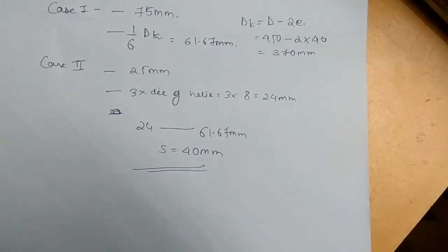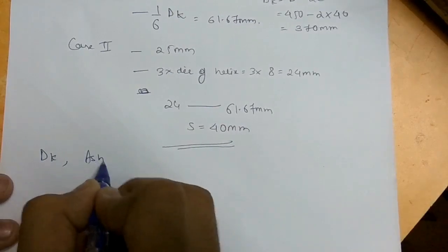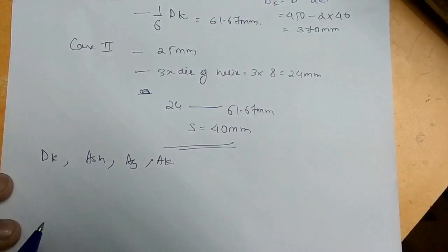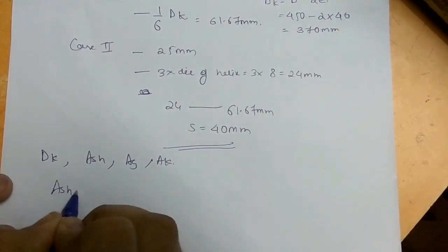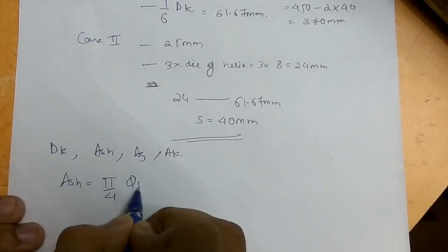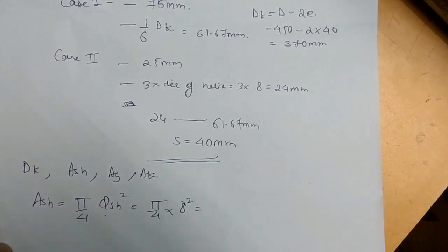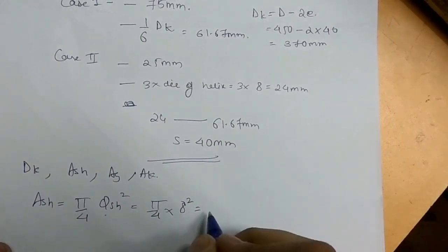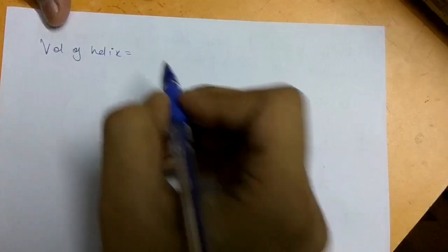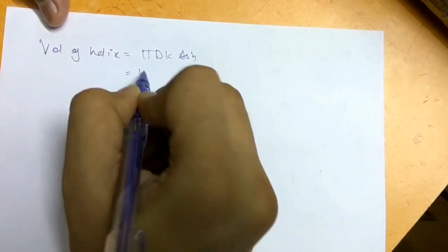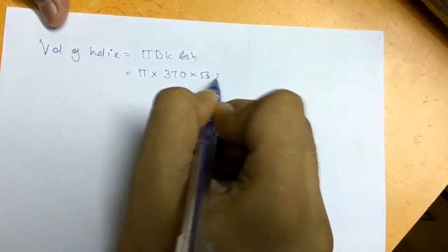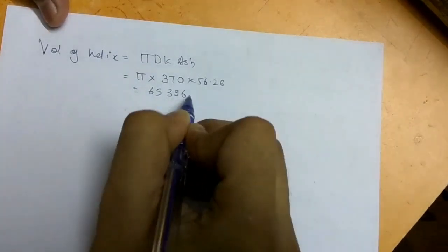Now calculate the ratio of volume of helical reinforcement to volume of core. Ash (area of cross-section of spiral) = π/4 × 8² = 56.26 mm². Volume of helix = π × DK × Ash = π × 370 × 56.26 = 65,396.02 mm³.